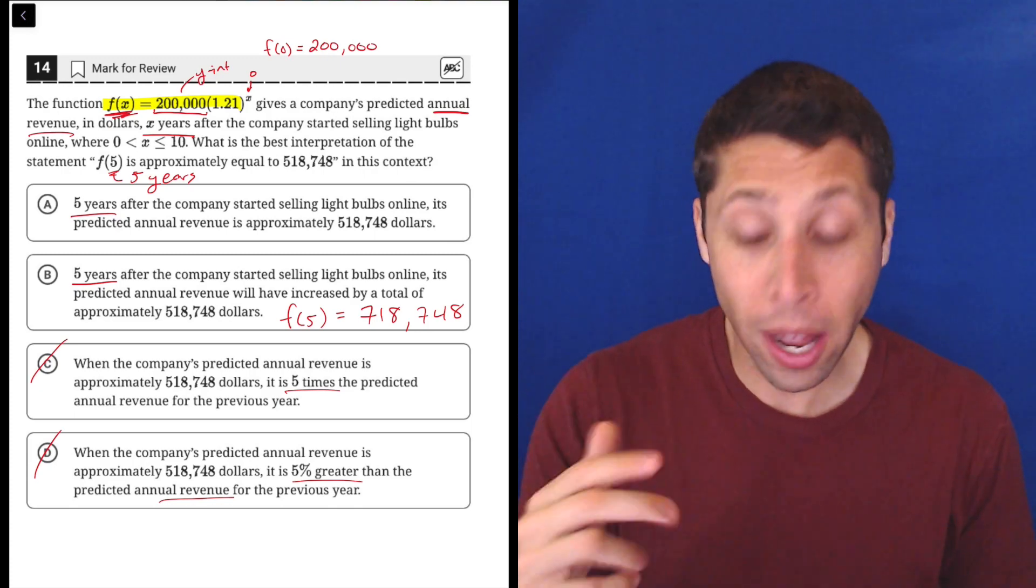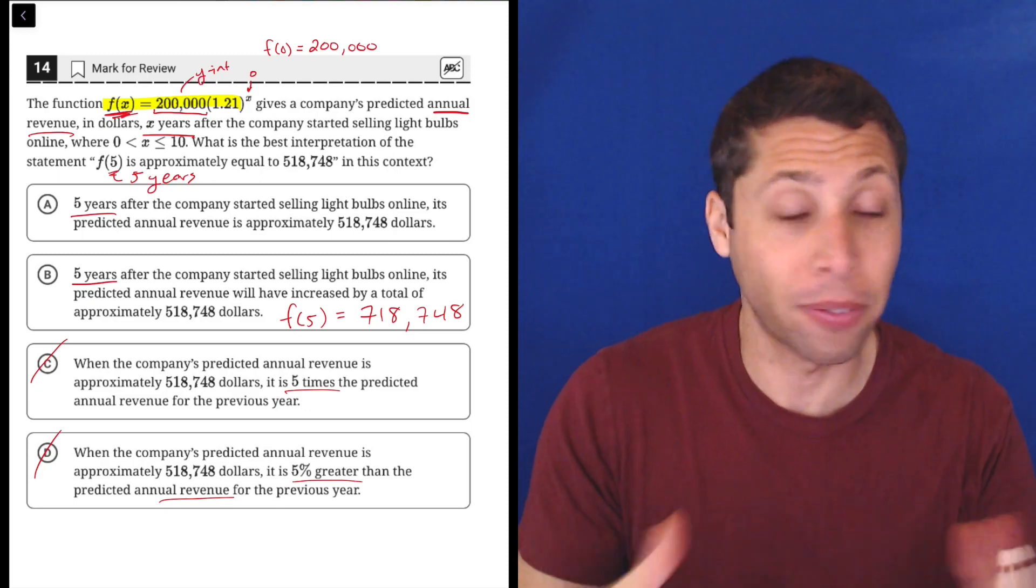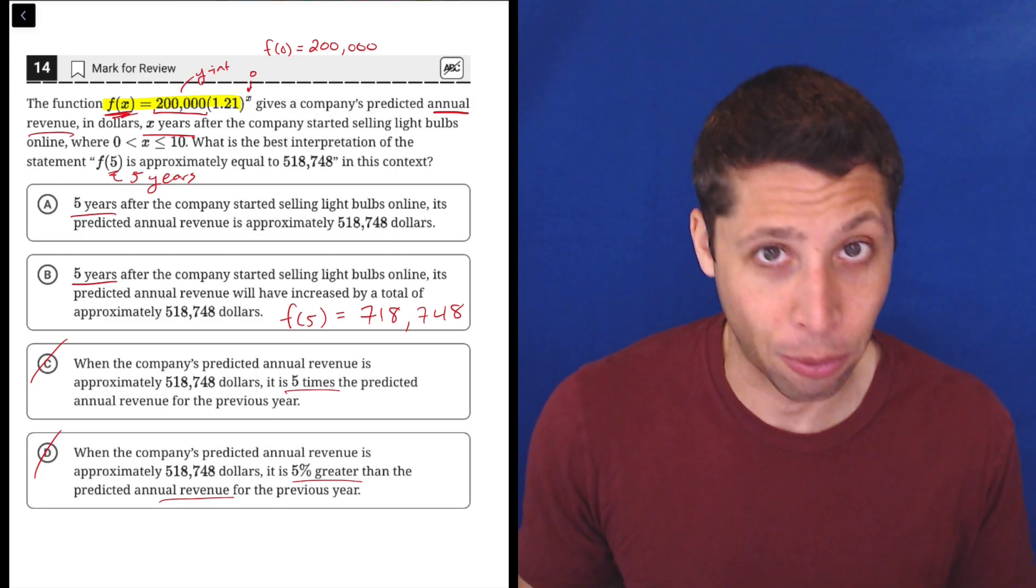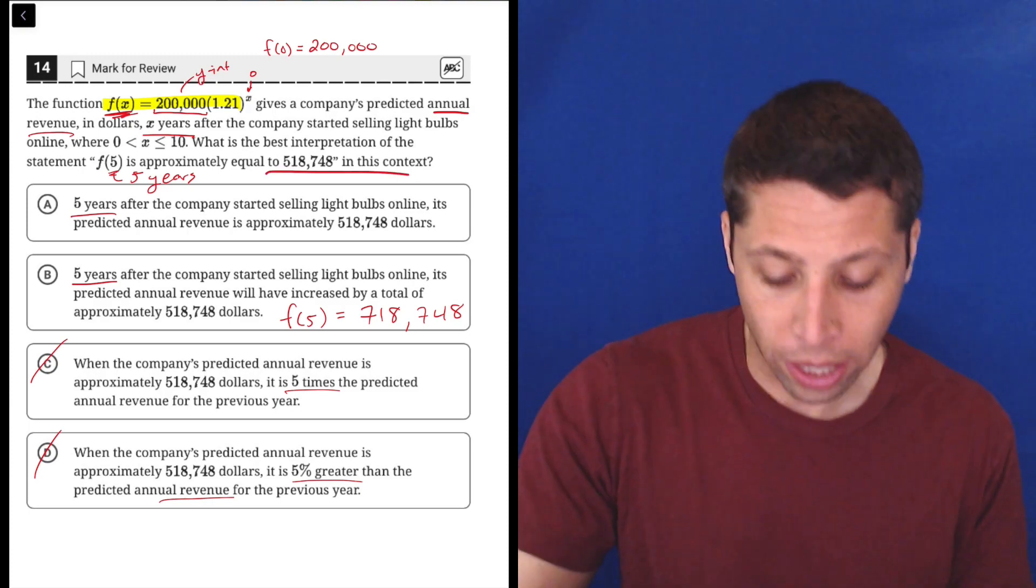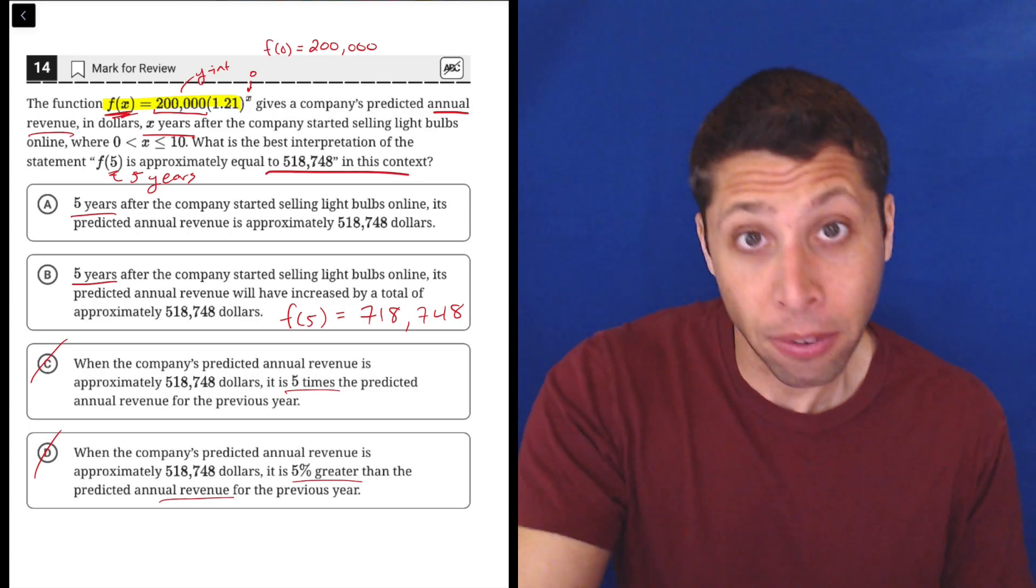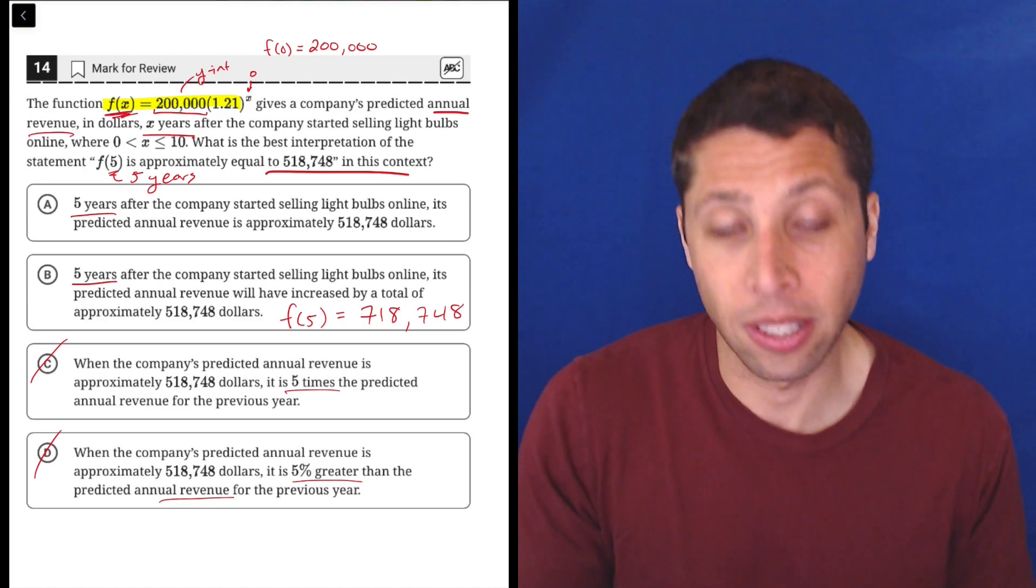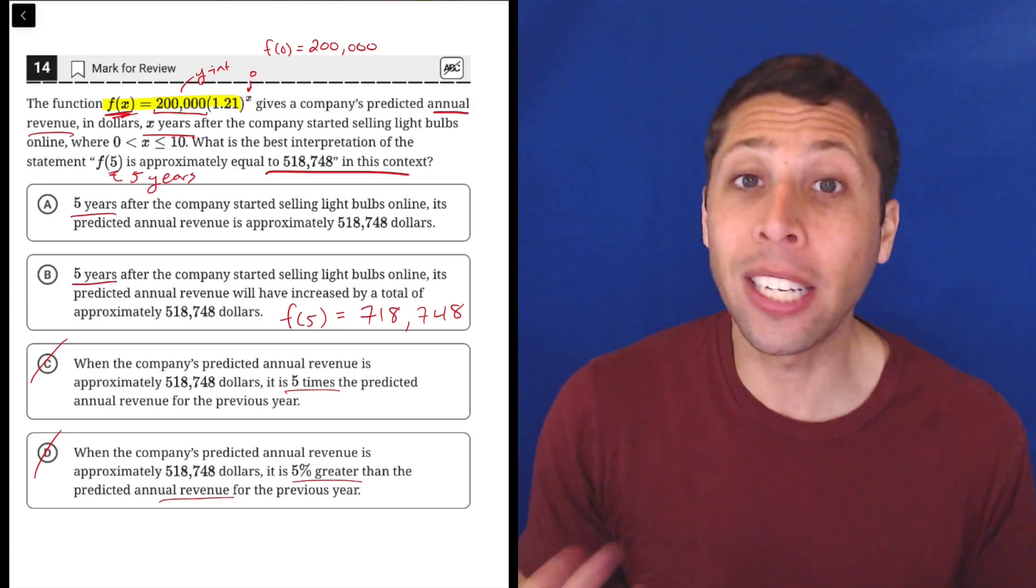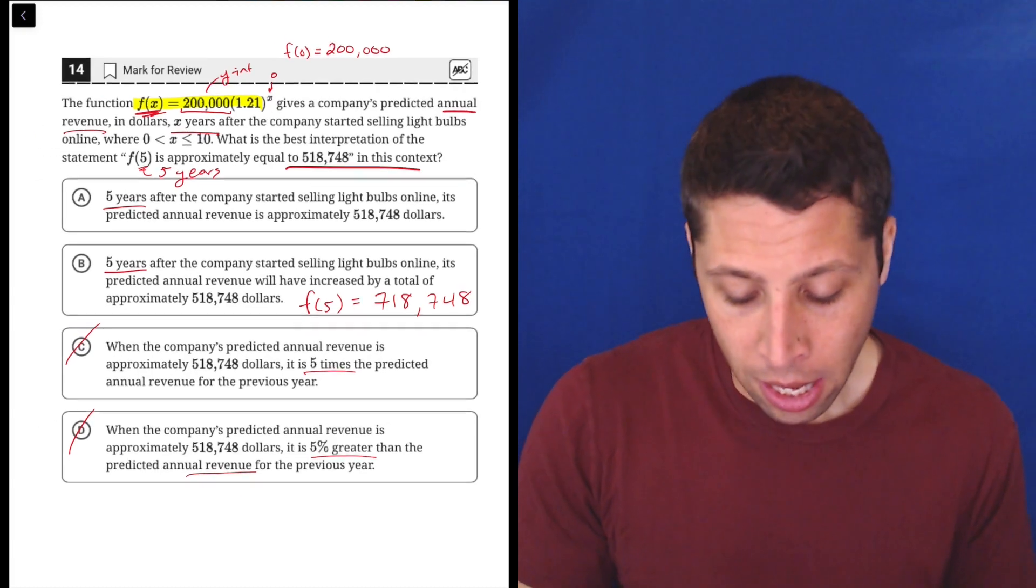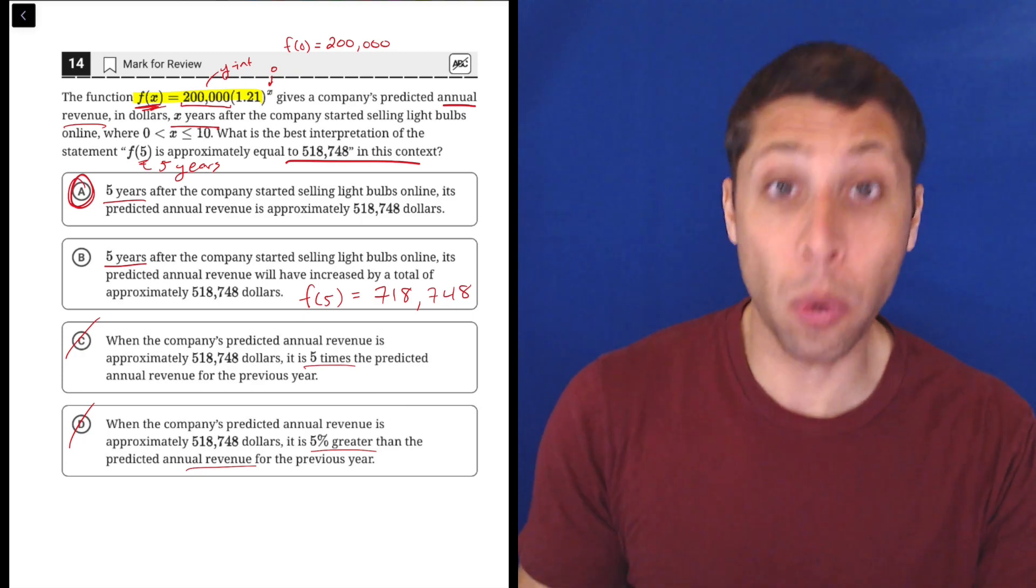And I know that for two reasons. One, I could just take my calculator and plug in five, write this equation, put in five for x, and I will not get 718,000 out. It's not going to happen. But also that's kind of what they told us. They told us that when I put five in, f of five, it's approximately equal to 518,748. So they're just telling me what I'm going to get out. So that 718 is not factoring in here at all. So I know that that part is more confusing. And I wouldn't worry about that for now.